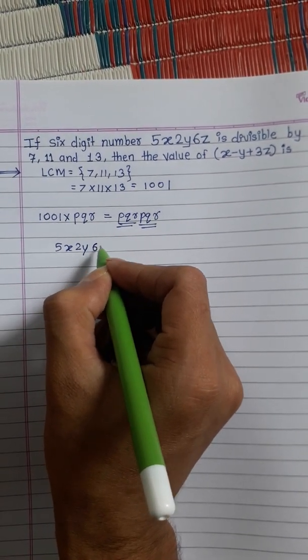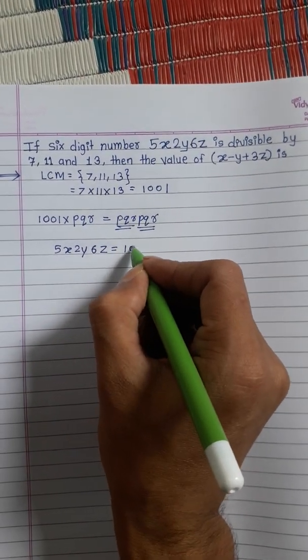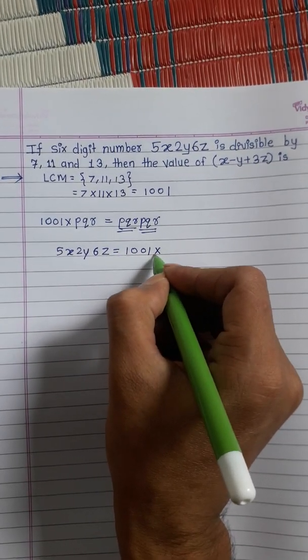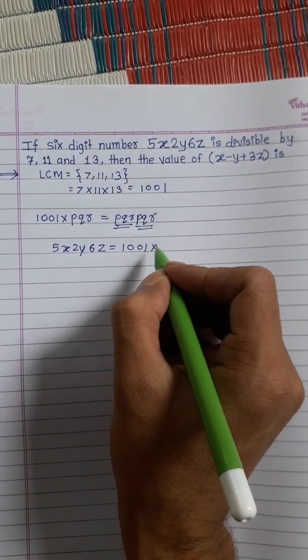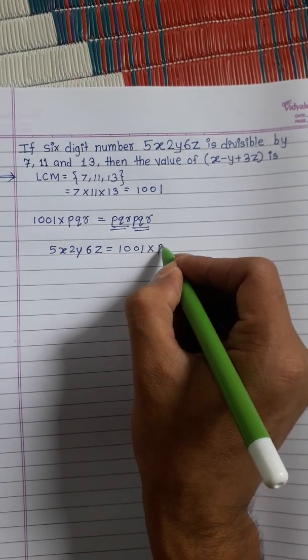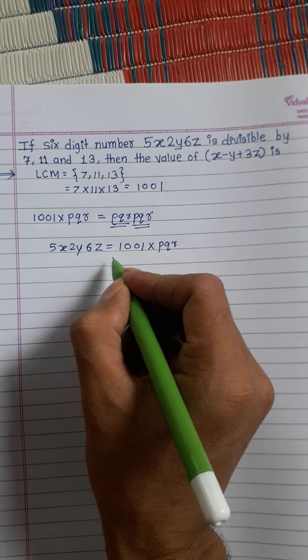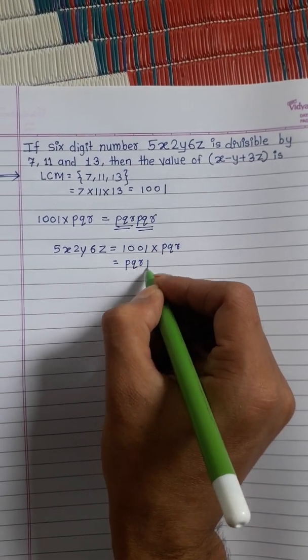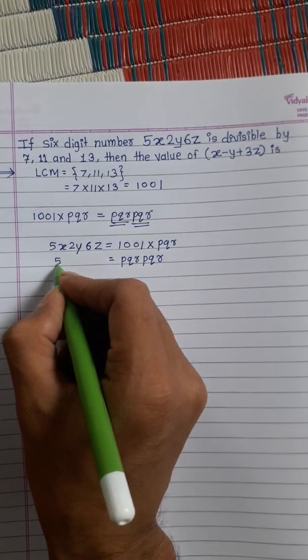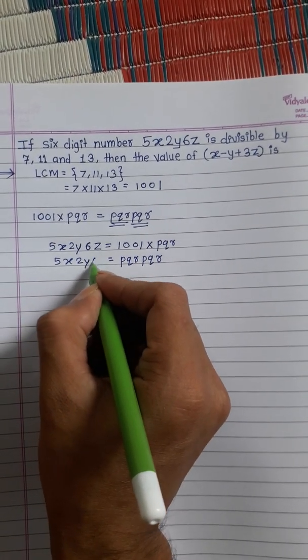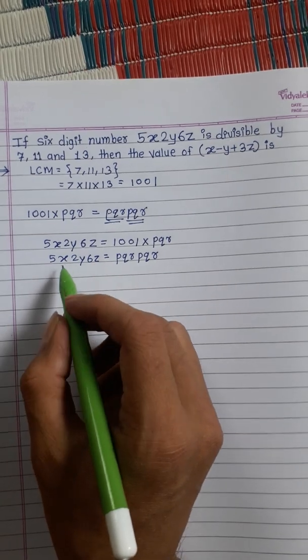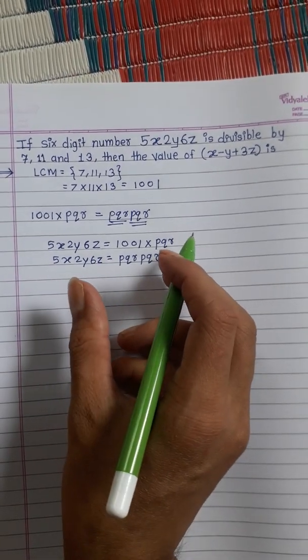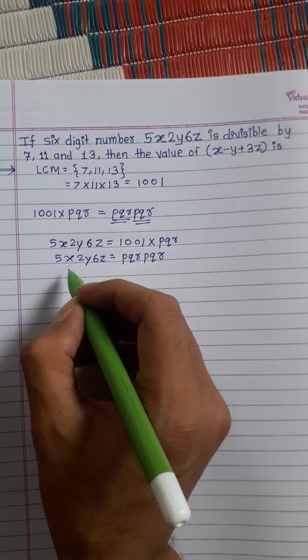Now, if a number is PQRPQR, this equals 5x2y6z. Since both numbers are the same, we will compare them.